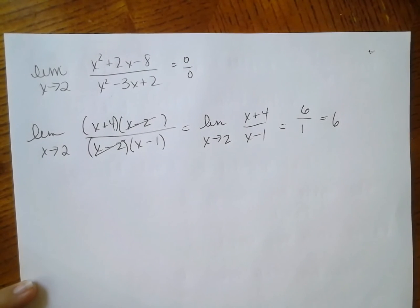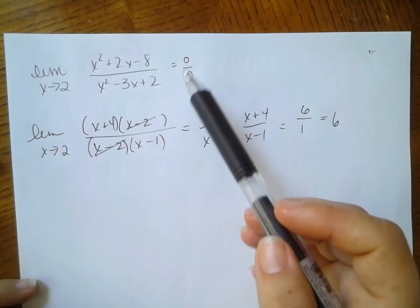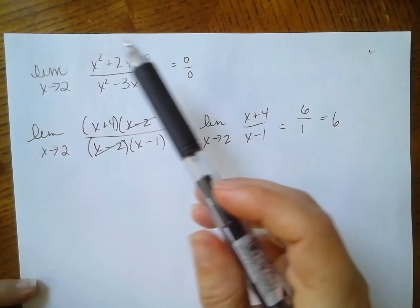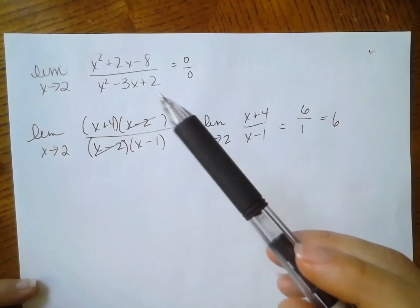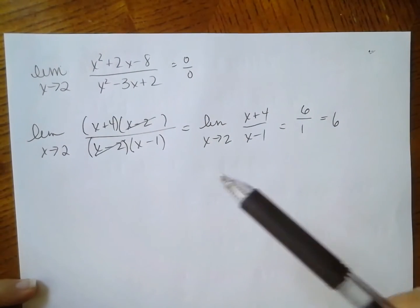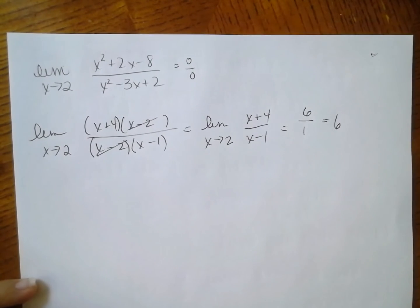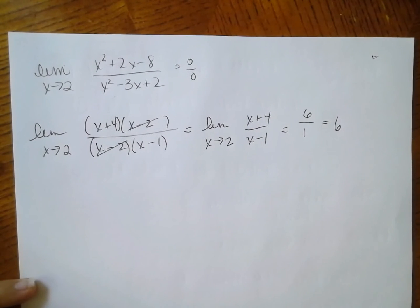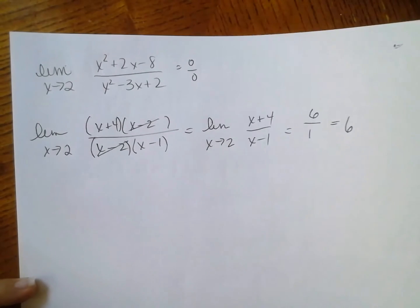If you have trouble factoring, here's a tip: if I get 0 over 0 and I'm approaching 2, then x minus 2 must be a factor in both numerator and denominator — that can help you factor as well. So the strategy is: if I get 0 over 0 with a rational function, I should factor, simplify the common factors, and then use direct substitution.